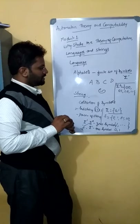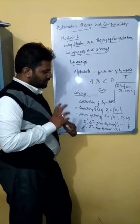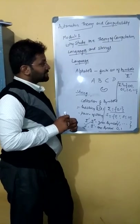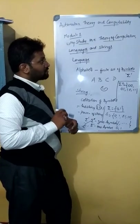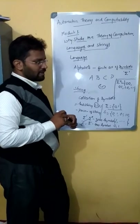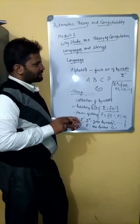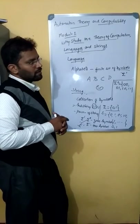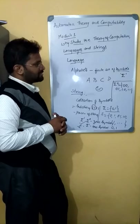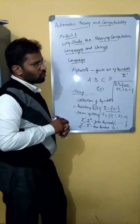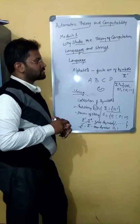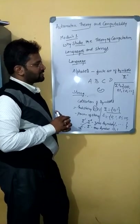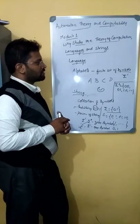In this session we discussed the definition of language, the definition of alphabet, the definition of string, and a few things about strings including substring and power of string. Next we will look at the language hierarchy in detail and then move on to finite state automata, or finite state machine. Thank you.